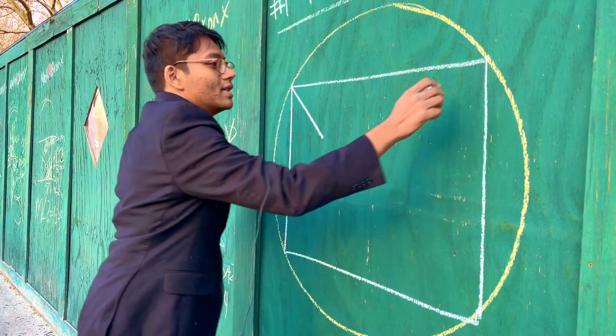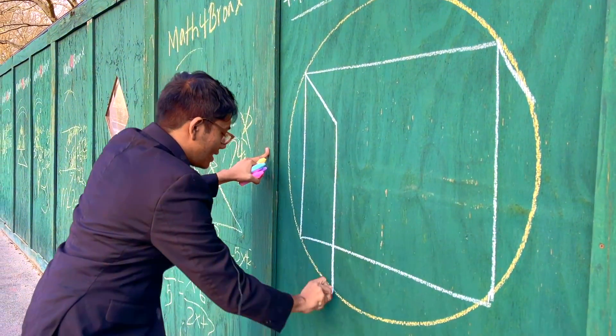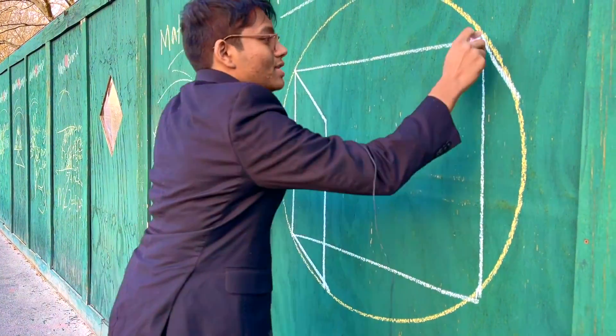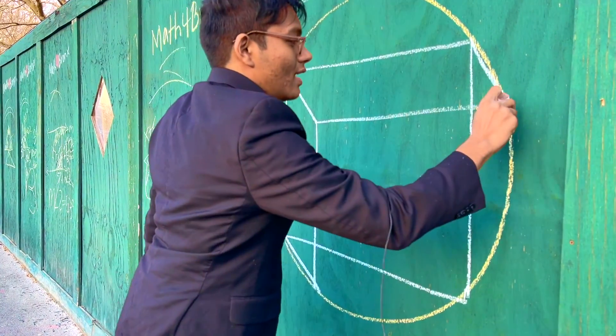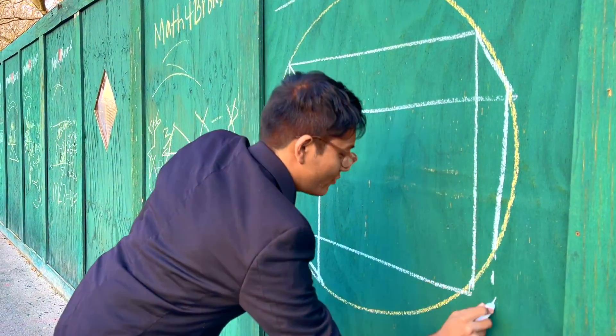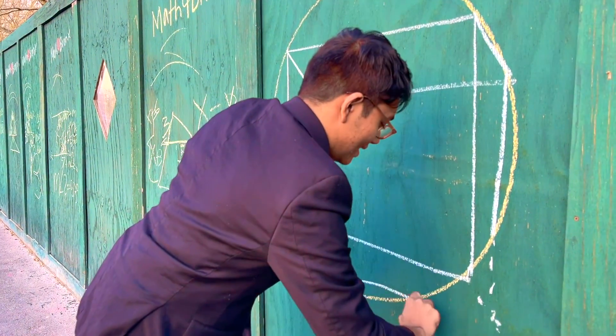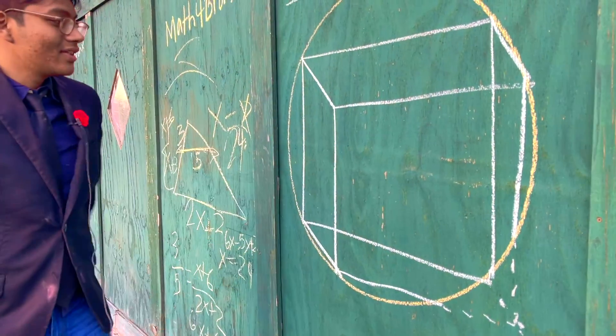So here's our cube. This is a crude drawing, not to scale, so don't take it too seriously, but this is what we have: a cube inside a sphere, as much as it can fit inside.